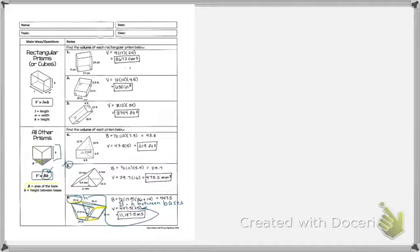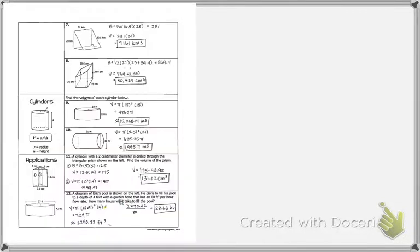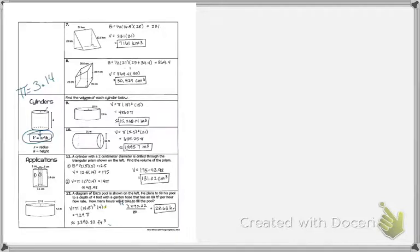Now, finishing off with cylinders. We're dealing with volume again and focusing on this formula. For pi, those of you without a scientific calculator should use 3.14. If you have a scientific calculator, your measurements will be a little more accurate, and your numbers may differ slightly from my answers on the homework. If you're off by maybe 2 or 3 units, that's probably why.